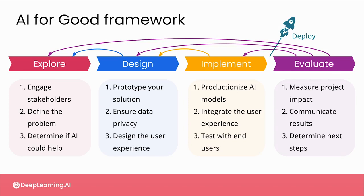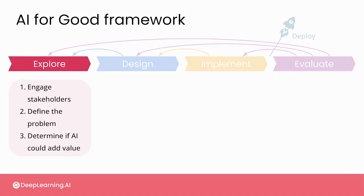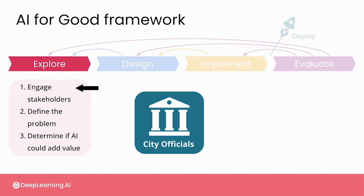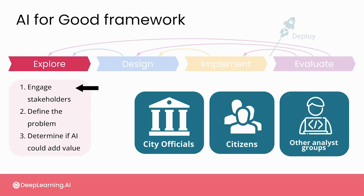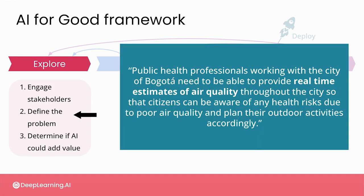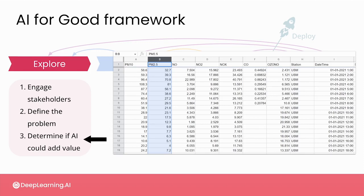While working on estimating the air quality of Bogota, you went through all of the steps of our AI for Good framework. In the explore phase, you looked at who the relevant stakeholders might be in a project like this — including public health officials, policy makers, people managing the air quality sensors, and the citizens. You formulated a problem statement and explored the data to determine whether AI could, in fact, add value to this project.